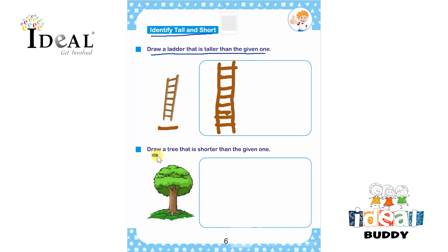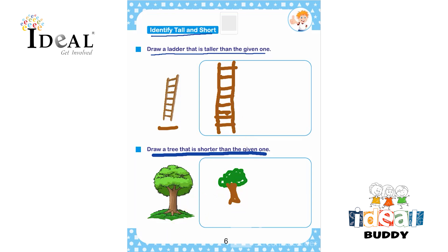After that, draw a tree that is shorter than the given one. The child has to draw a tree that is shorter than the given one and do it here. This tree is shorter than what is given over here.